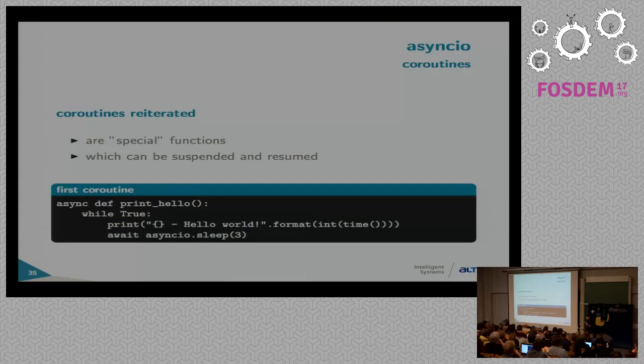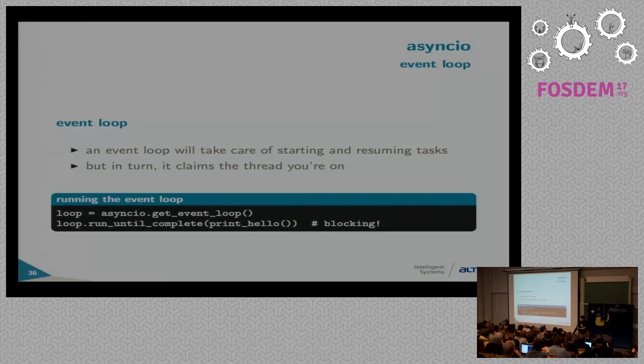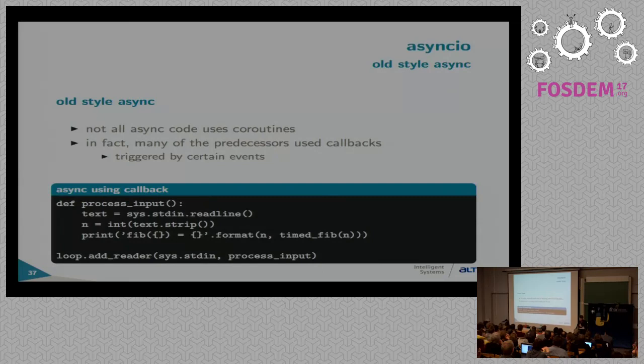If you have things like resuming and suspension, you need something to do that for you — that's where the loop comes in. You ask asyncio for an event loop, give it a kick to run forever or to start with a top-level coroutine and stop after it finishes. A loop is a pretty important thing for asyncio. So, async is programming with coroutines in Python.